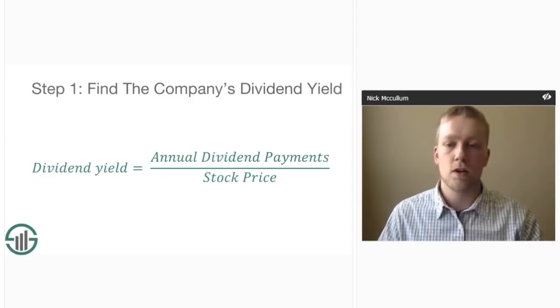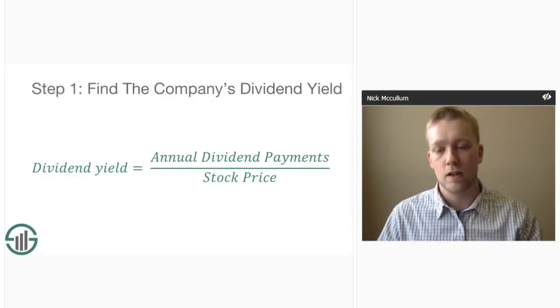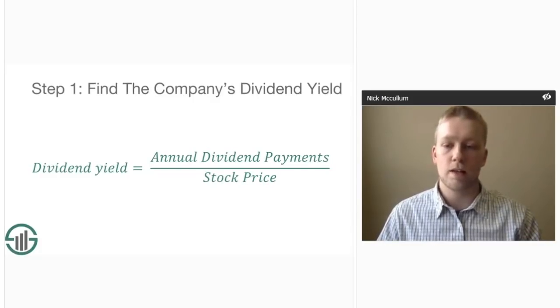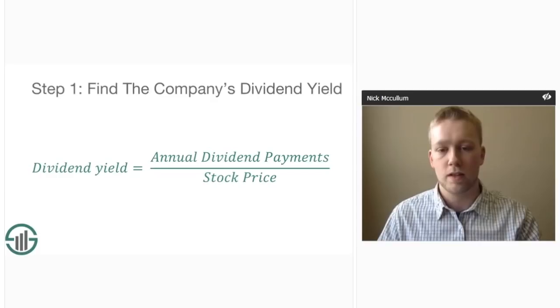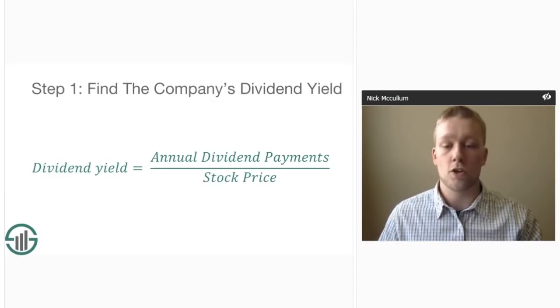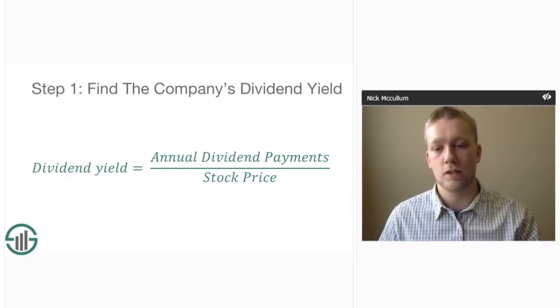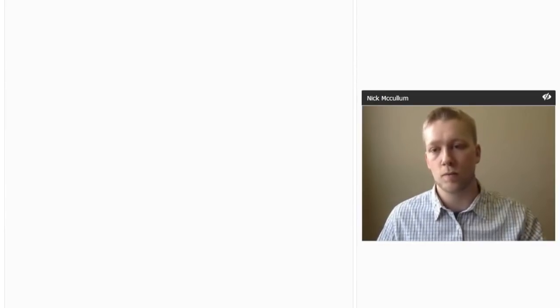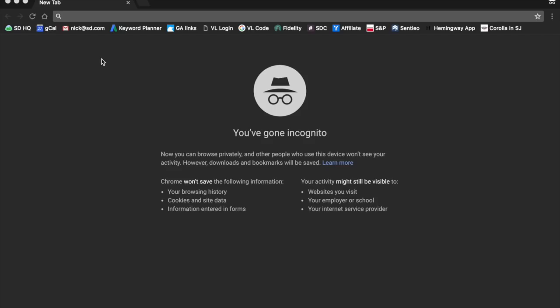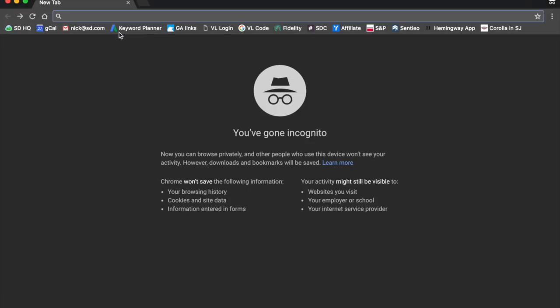The first thing we'll need to do is find the company's dividend yield. Dividend yield is calculated by taking a company's annual dividend payments and dividing it by its stock price. In reality, people tend not to use this formula directly because dividend yields are readily available through multiple data sources. Google is a great search engine for financial research because it integrates with Google Finance to give you on-the-fly financial data. For example, if you want Coca-Cola's dividend yield, you can just search up a stock quote and that information will be automatically provided.